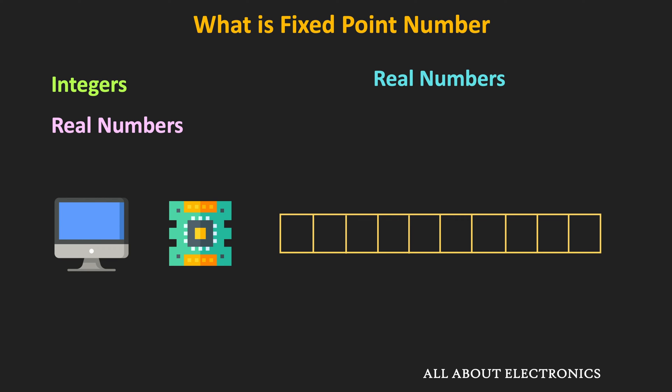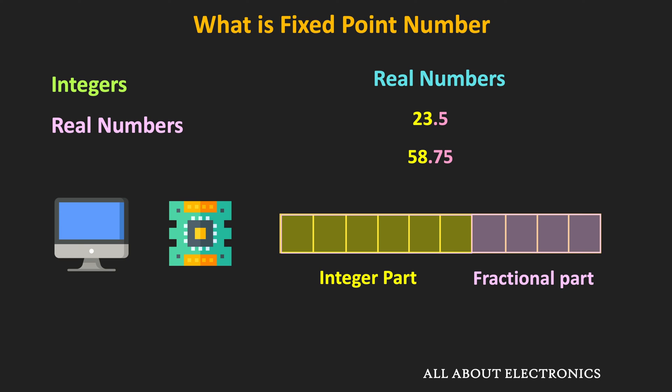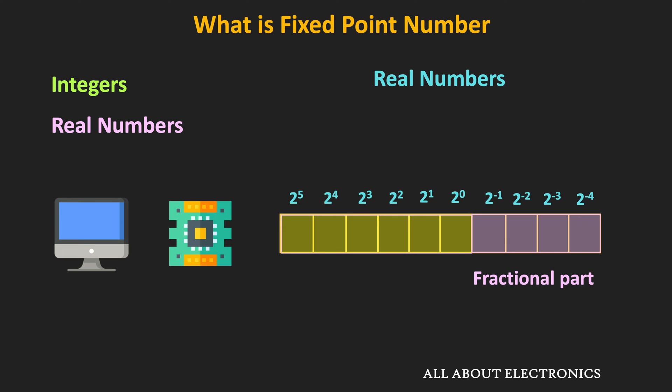When dealing with real numbers, we always encounter a decimal point or radix point. The digits on the left represent the integer part and the digits on the right represent the fractional part. To store such numbers in binary format, some bits are reserved for the integer part and some bits are reserved for the fractional part. Let's say once again these real numbers are stored in a 10-bit format, where 6 bits are reserved for the integer part and 4 bits are reserved for the fractional part. When we store these numbers in binary format, there is no provision for storing the binary point explicitly, but we have different sections for the integer and fractional parts. Just after the 2-to-the-power-0 place, we assume there is a binary point.